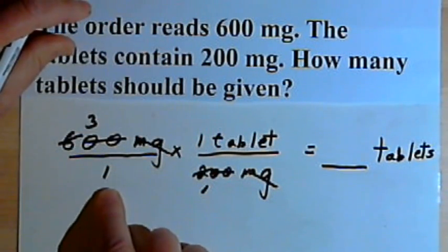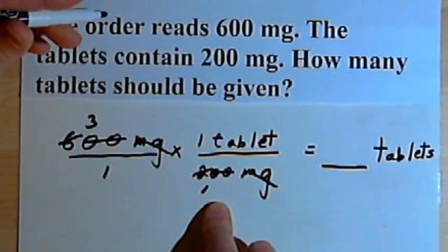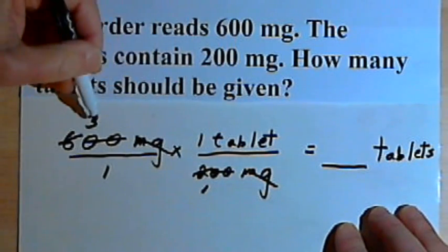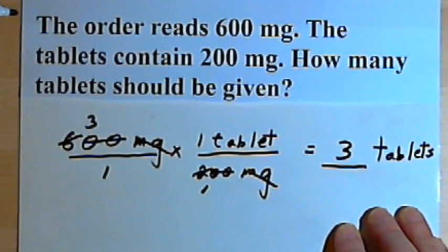Now my denominator has just a 1 and a 1 in it, so I'm not even going to have to worry about the denominator. If I multiply the numerators across, I get 3 times 1 tablet, and that's going to mean I've got 3 tablets.